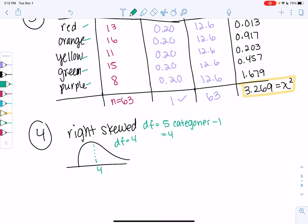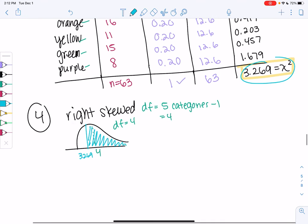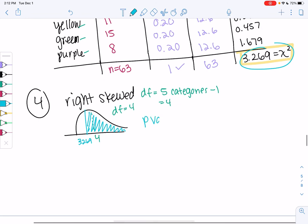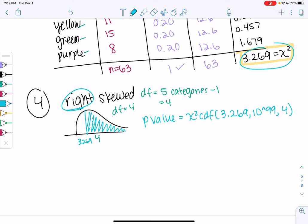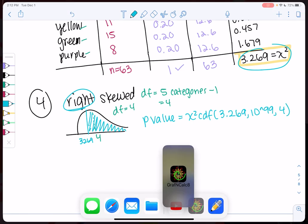My chi-square value is 3.269. So I think I'm going to get too big of a value here because I've shaded so much of the curve. P-value is chi-square cdf. Our lower is 3.269. Our upper is infinity. Remember it's always right-tailed on these. And then degrees of freedom is 4. So go ahead and type that on your calculator to get the p-value.